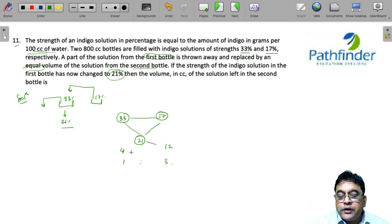So now what do you do? You simply say that since there are 800 cc bottles, both of them, and you want a 21% solution, that means the 33% solution from the first bottle must be in the ratio of 1:3 with 17% from the other bottle.